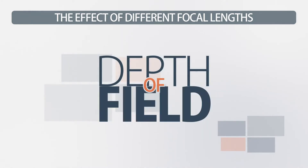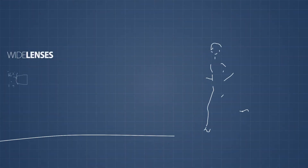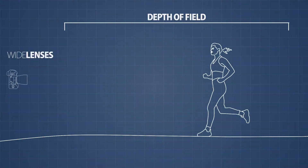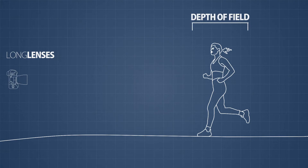Another thing that focal length has a large effect on is depth of field. I'm not going to go into depth here because depth of field will be covered in its own video, but just to give you an idea: wide lenses have greater depth of field, so more is in focus, while long lenses have a shallower depth of field, so much less is in focus.